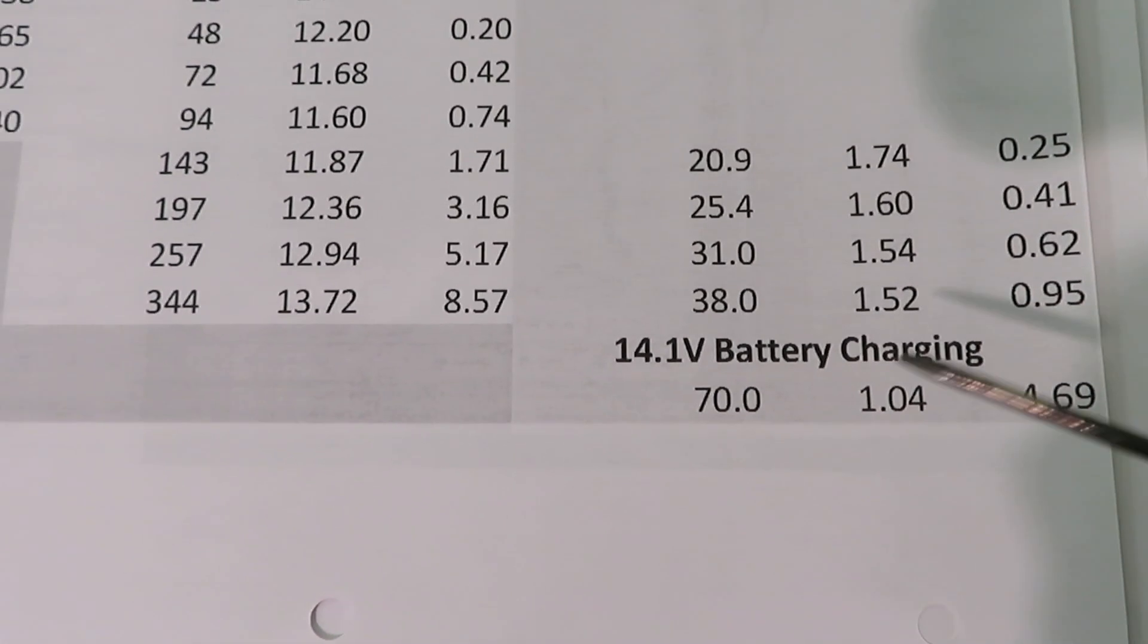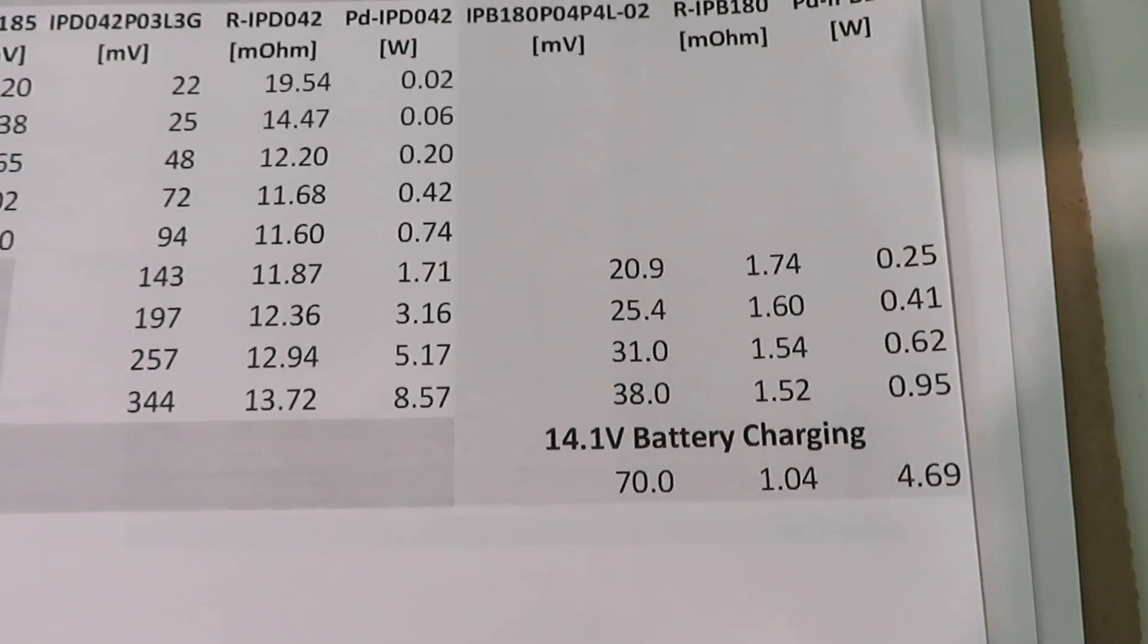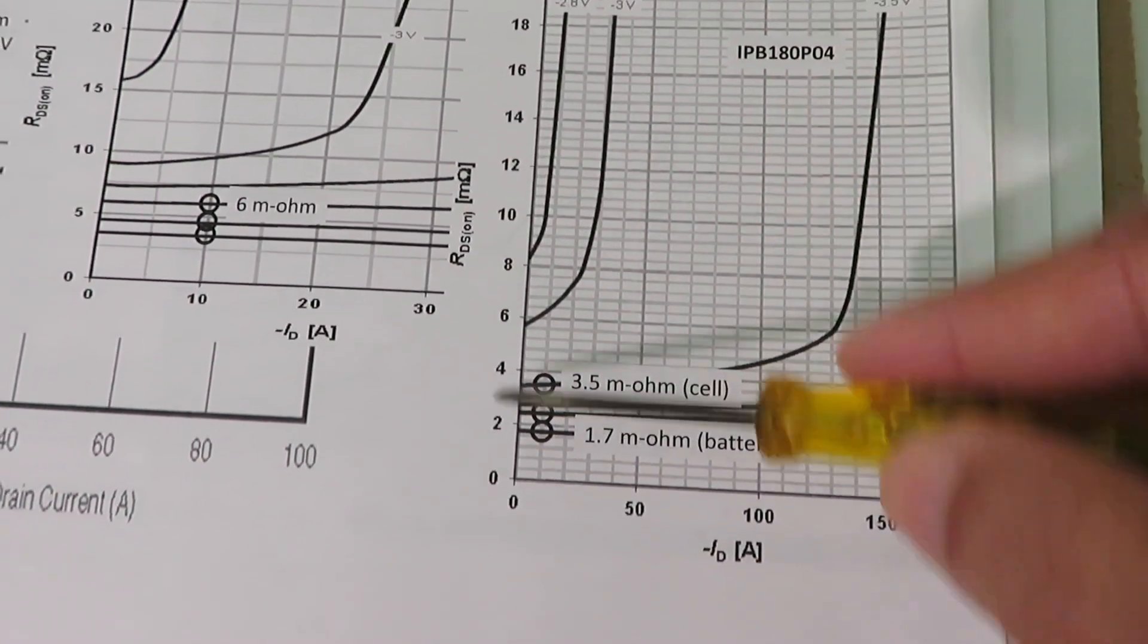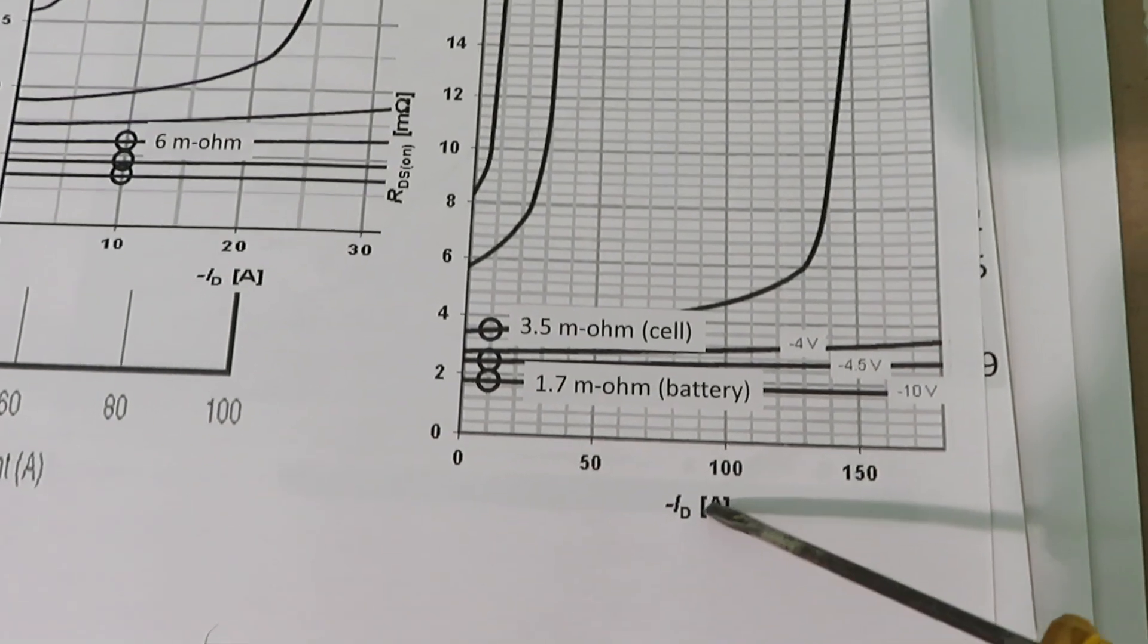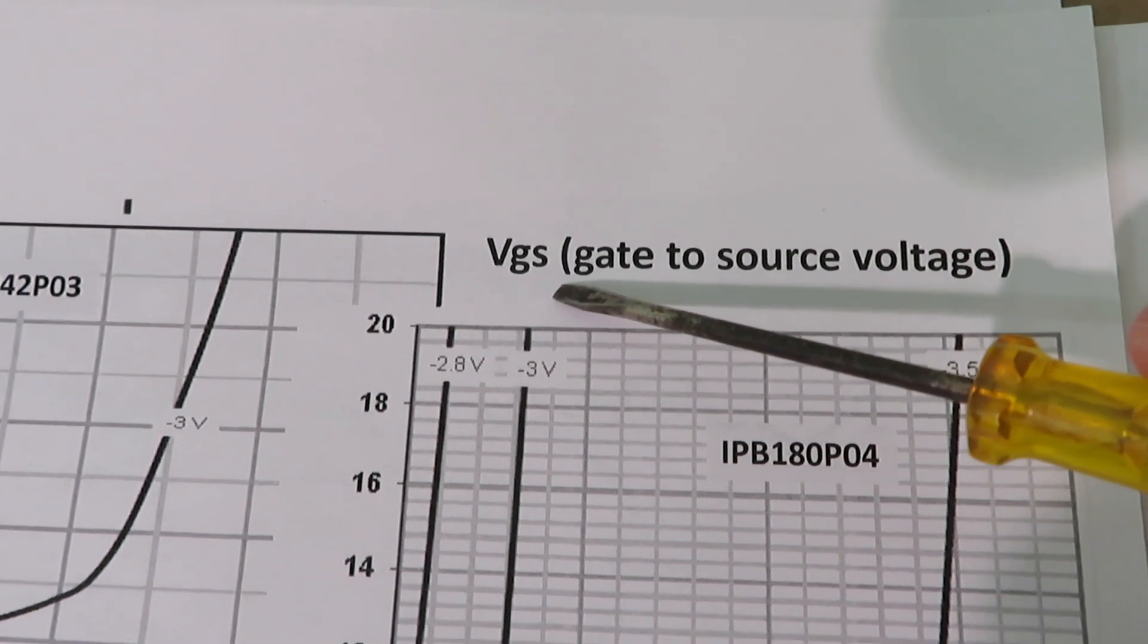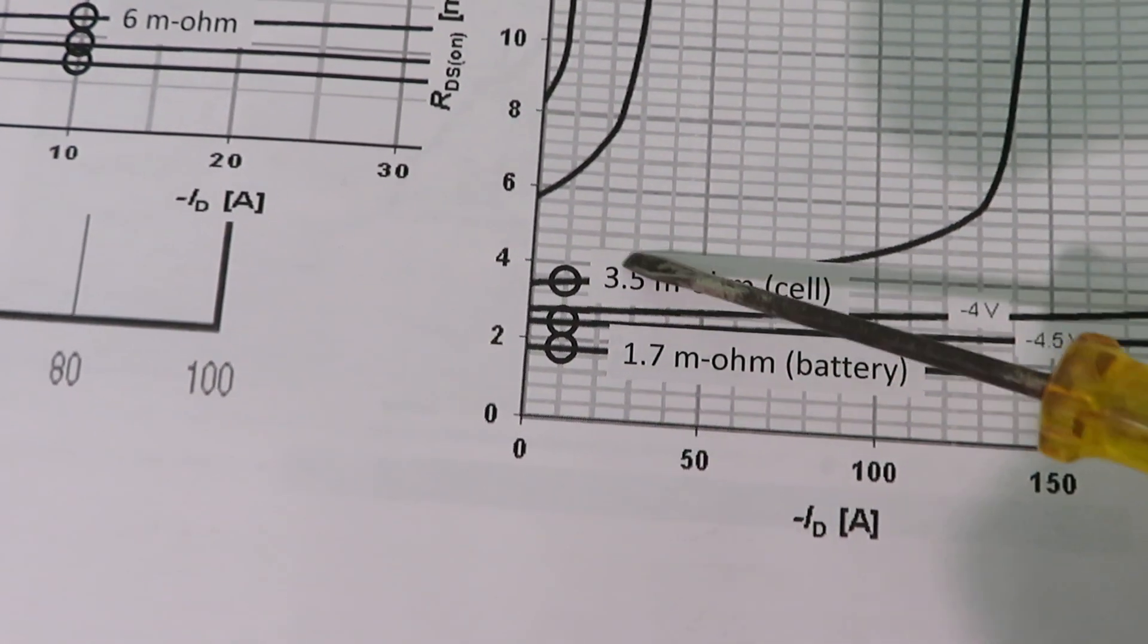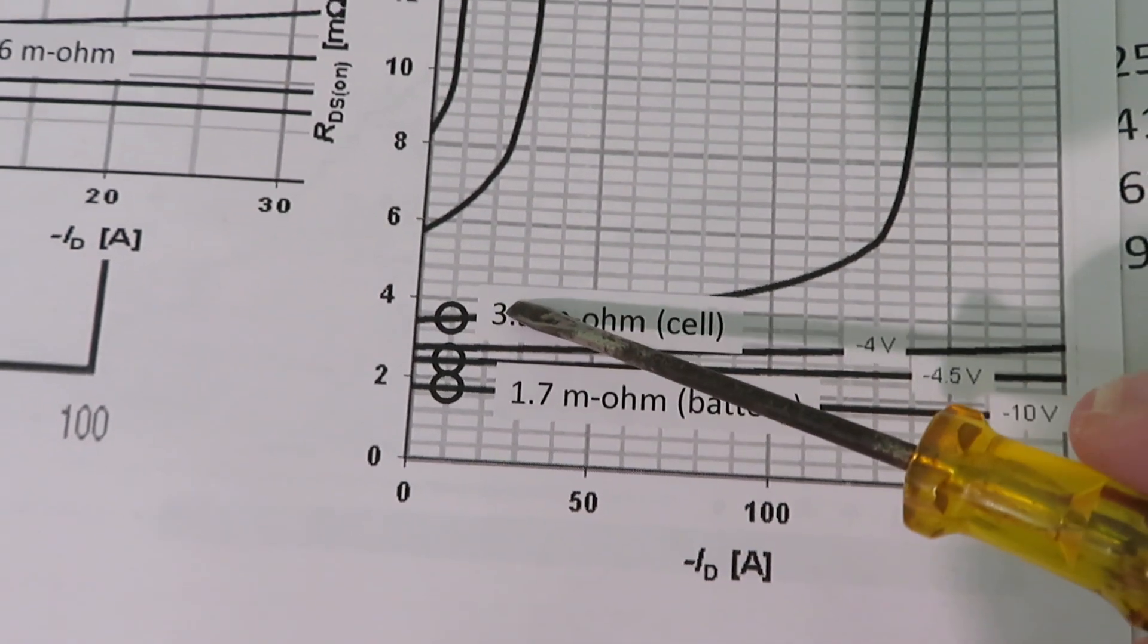The reason charging the battery is lower than charging cells is because the ideal diode uses the MOSFET. This is the resistance of drain to source, and this is the current that flows through the drain to source. As you can see, at 3.5 volts of gate-to-source voltage and low current, the resistance is 3.5. As soon as the current goes up, the resistance climbs up drastically.